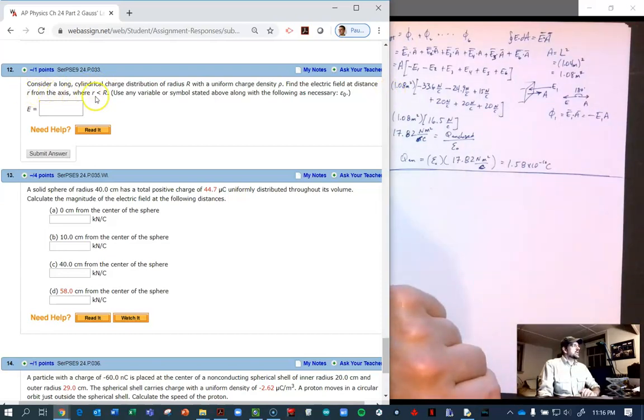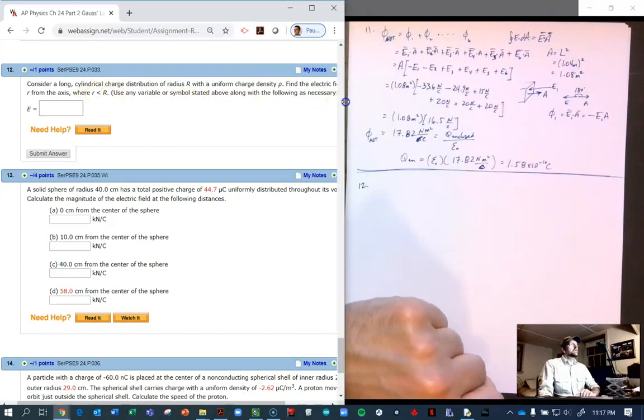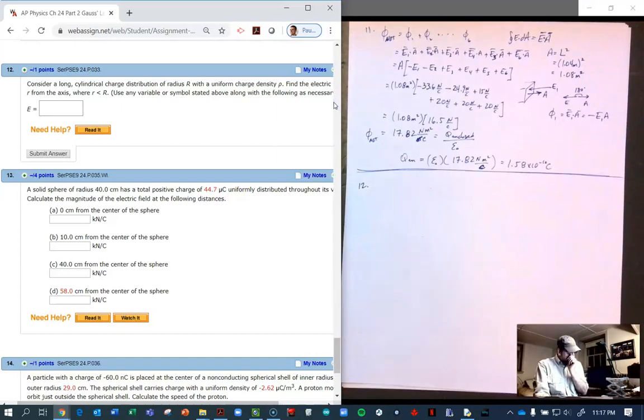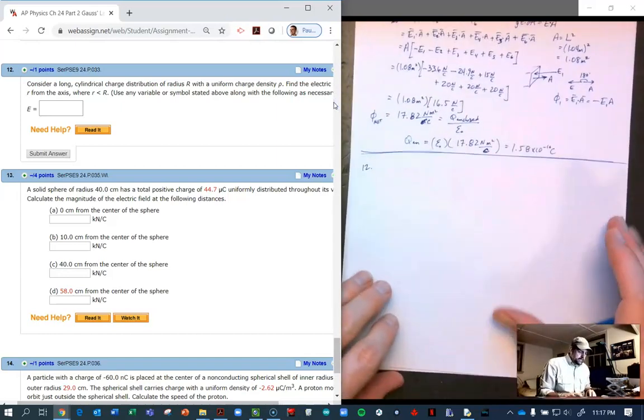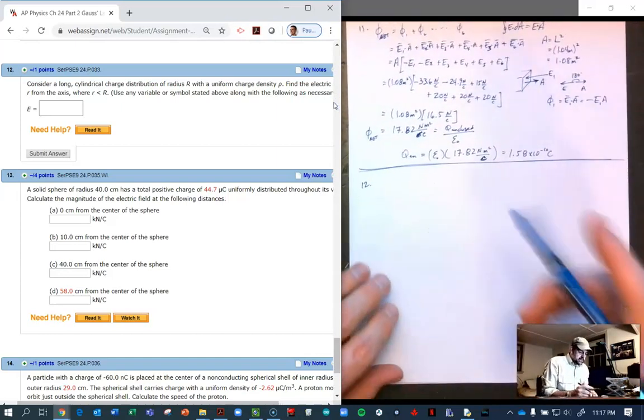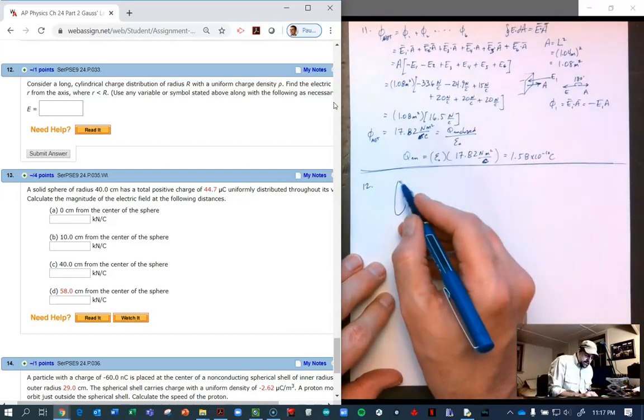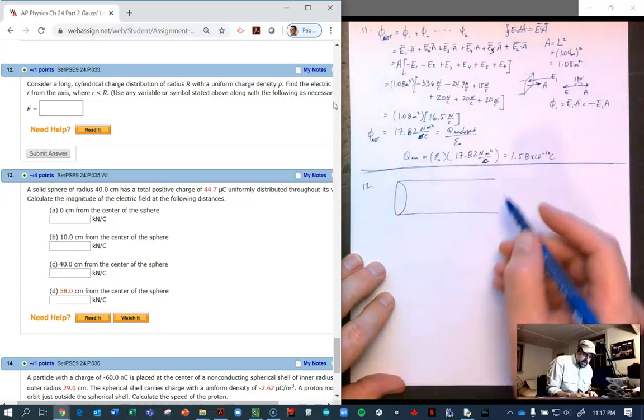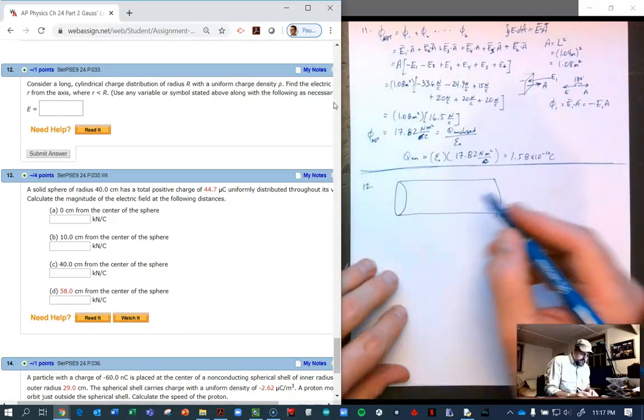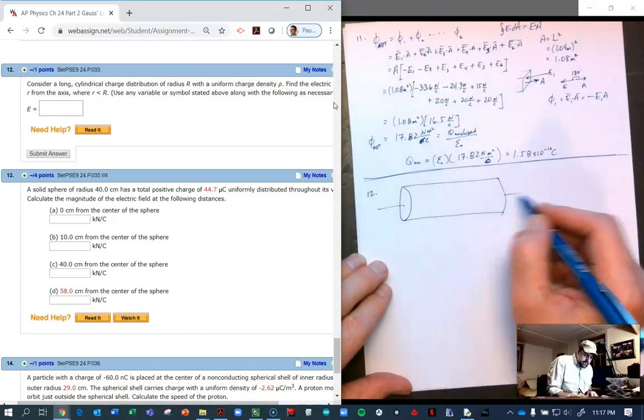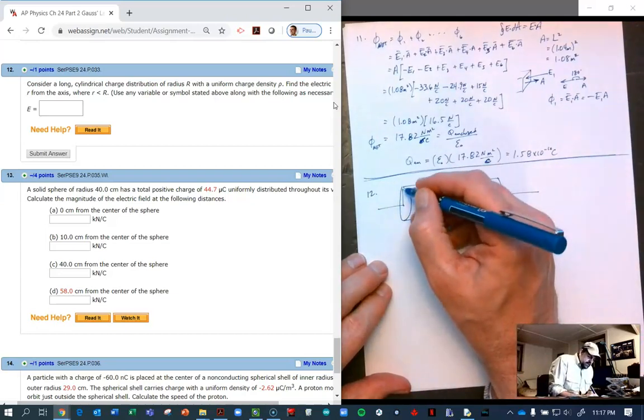We're inside the cylinder, little r is less than big R. Let's do that calculation. As you can imagine, we're going to use Gauss's law here. We have a big cylinder placed on the axis and it has a radius R.